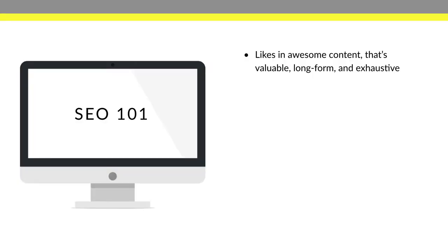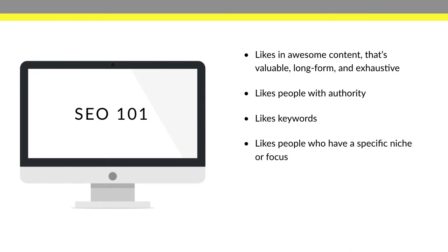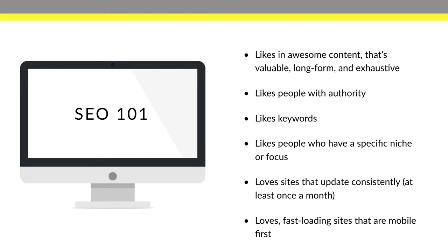When it comes to SEO 101, there are a couple of things to keep in mind. Google and other search engines like awesome content that's valuable, long form, and exhaustive. You can write some short blog posts, but the majority should be long form and exhaustive. Google also likes people with authority, keywords, a specific niche or focus, and sites that update consistently — at least twice a month. They also love fast-loading sites that are mobile first.